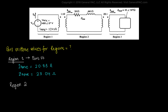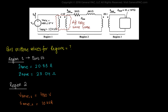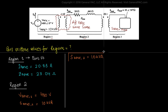Region 2. First, let's write down the base values given for Region 2. We know the rating of the generator — both V-base and S-base — for Region 1. Since there is a step-up transformer between Region 1 and Region 2, the V-base for Region 2 will be different; however, the S-base will remain the same. In fact, the S-base remains the same for Region 1, Region 2, and Region 3. So the S-base for Region 2 is simply equal to 10kVA.